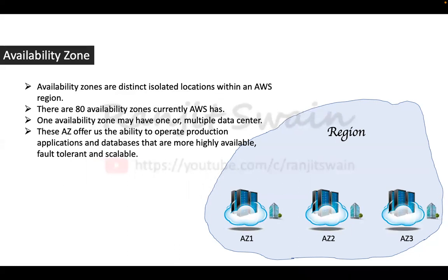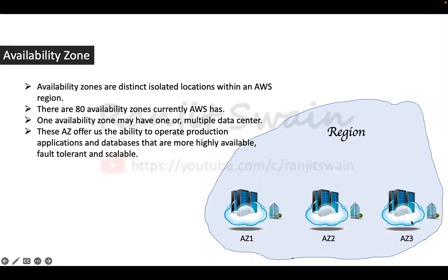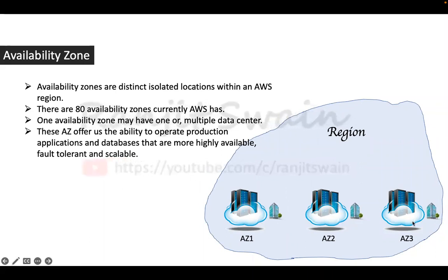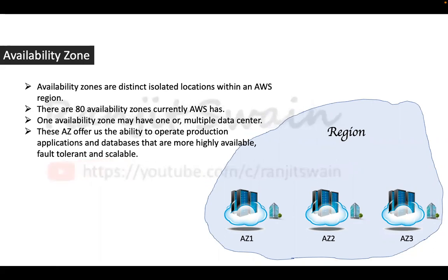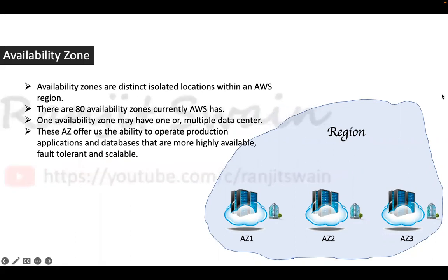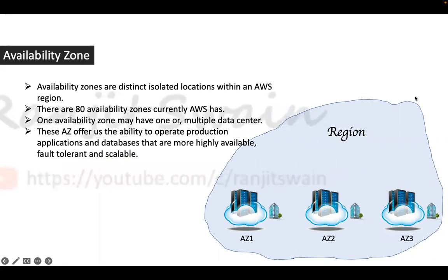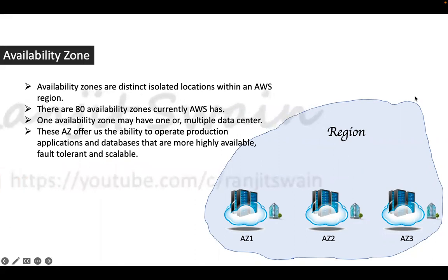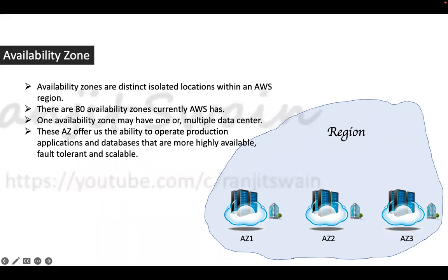Availability zones are distinct isolated locations within an AWS region. Looking at the diagram: a region will have one or multiple availability zones — AZ1, AZ2, AZ3. Most regions have one, three, or five availability zones. Each availability zone contains one or more data centers.